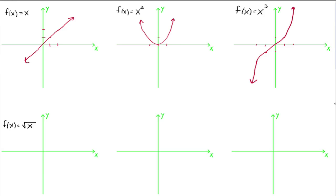Next, the square root function takes every real number and pairs it up with its square root, but we have to get real numbers back. If x is negative 4, the square root of negative 4 is not a real number, so it doesn't lie on our coordinate system. When x is 0, the square root of 0 is 0. We can only take numbers to the right of 0. When x is 1, the square root of 1 is 1; when x is 4, the square root of 4 is 2. When you connect the dots, it's like half a parabola on its side. Its domain is from 0 to infinity, and its range is from 0 to infinity as well.